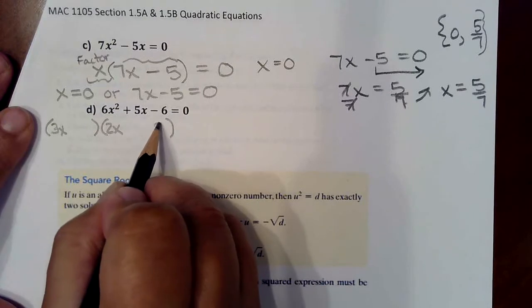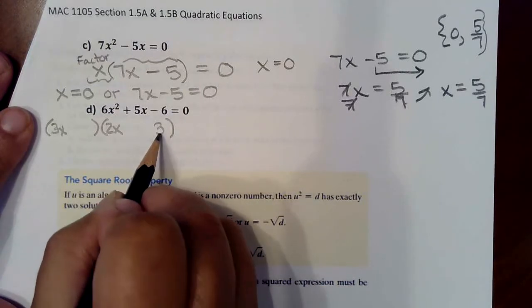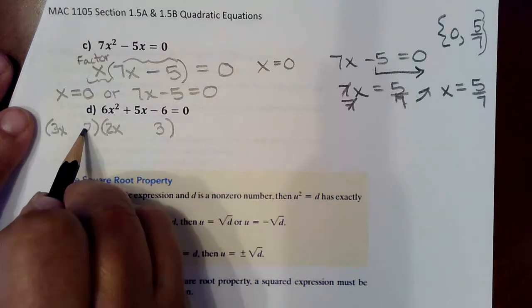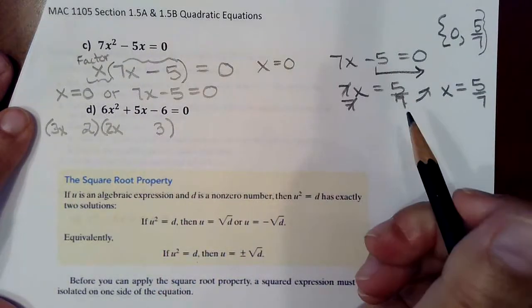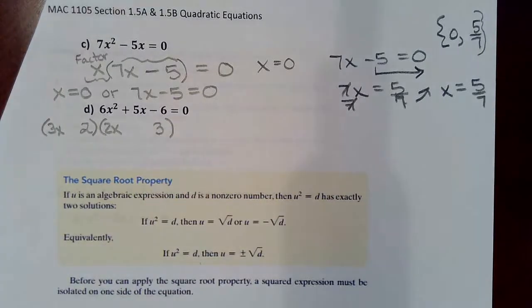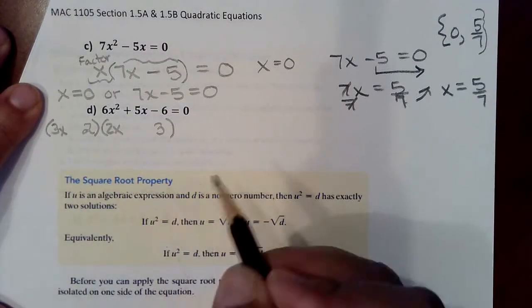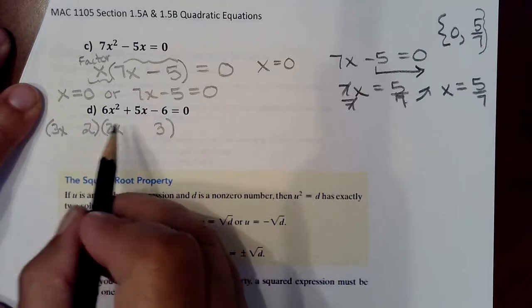Then multiplying, putting the 3 here, which the 3 could either go here or it could go here. So that's where the guessing part comes in. Now, if you're really good with the foiling method, you're going to guess much more quickly than someone who's not good with the foiling method. So I'm thinking already about foiling as I'm deciding where these numbers go.